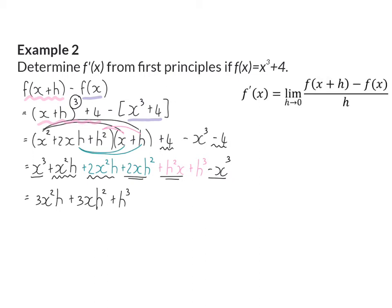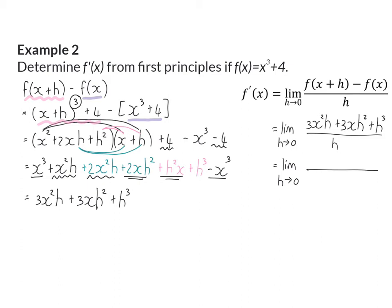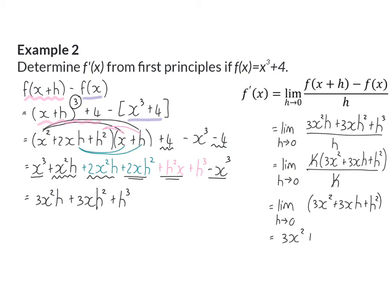This will be substituted into the complete formula. We want to calculate the limit as h is approaching 0. The numerator we've just calculated has to be divided by h, but we'll have to factorize first to get rid of that h in the denominator. So I'm taking out h as a common factor in my numerator, then simplifying by saying h divided by h is 1. Then calculating the limit as h approaches 0 of 3x squared plus 3xh plus h squared. Substituting h with 0, we are left with only 3x squared as our derivative.